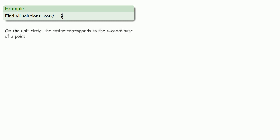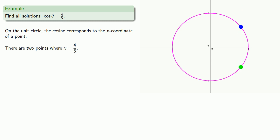So remember that on the unit circle, the cosine corresponds to the x-coordinate of a point. And we see that if we draw a picture, there are two points where x is equal to 4 fifths, and this gives us two angles whose cosine is 4 fifths. We can rotate by a positive amount to get to the first point, or rotate by a negative amount to get to the other point.